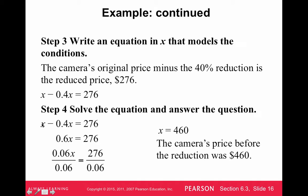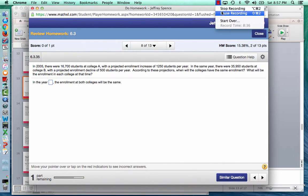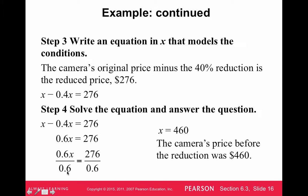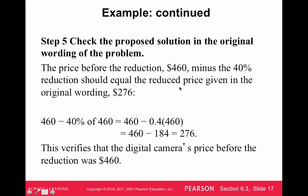We have x minus 0.4x. Since x is 1x, then 1 minus 0.4 is 0.6, so 0.6x equals 276. In other words, we're paying 60% of the original price. Dividing both sides by 0.6 gives 276 divided by 0.6, which equals 460. The original price was $460. To double-check: 40% of 460 is 184. Subtracting 184 from 460 gives 276, which is correct.